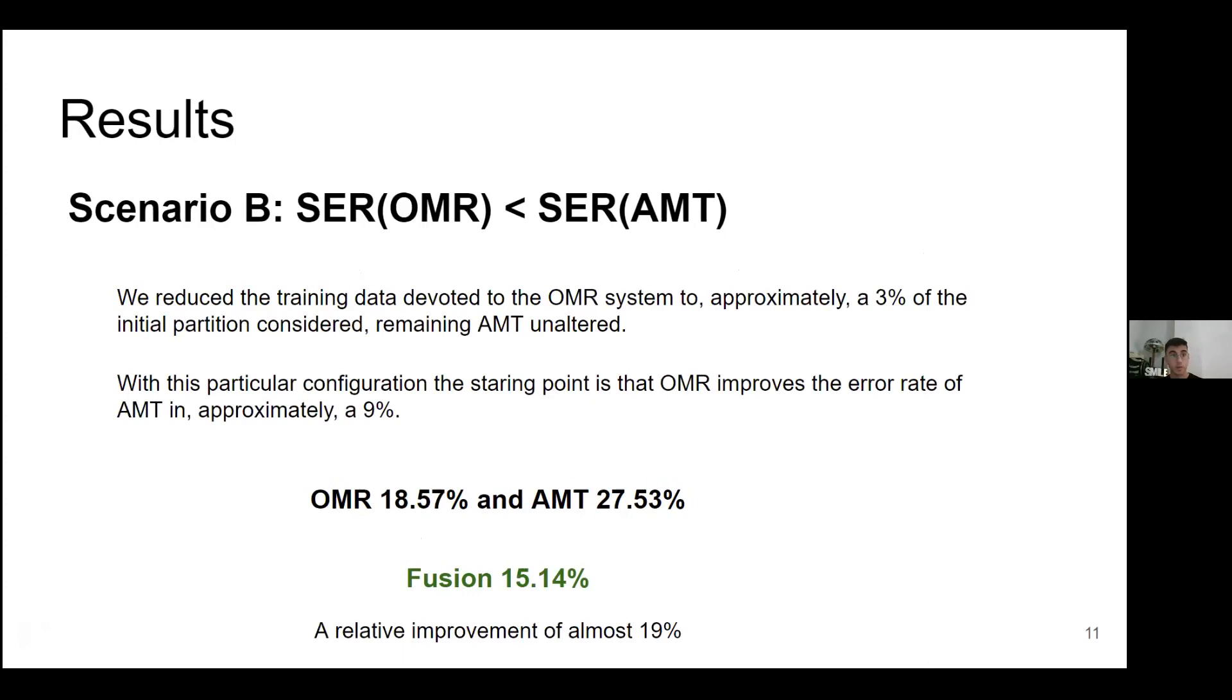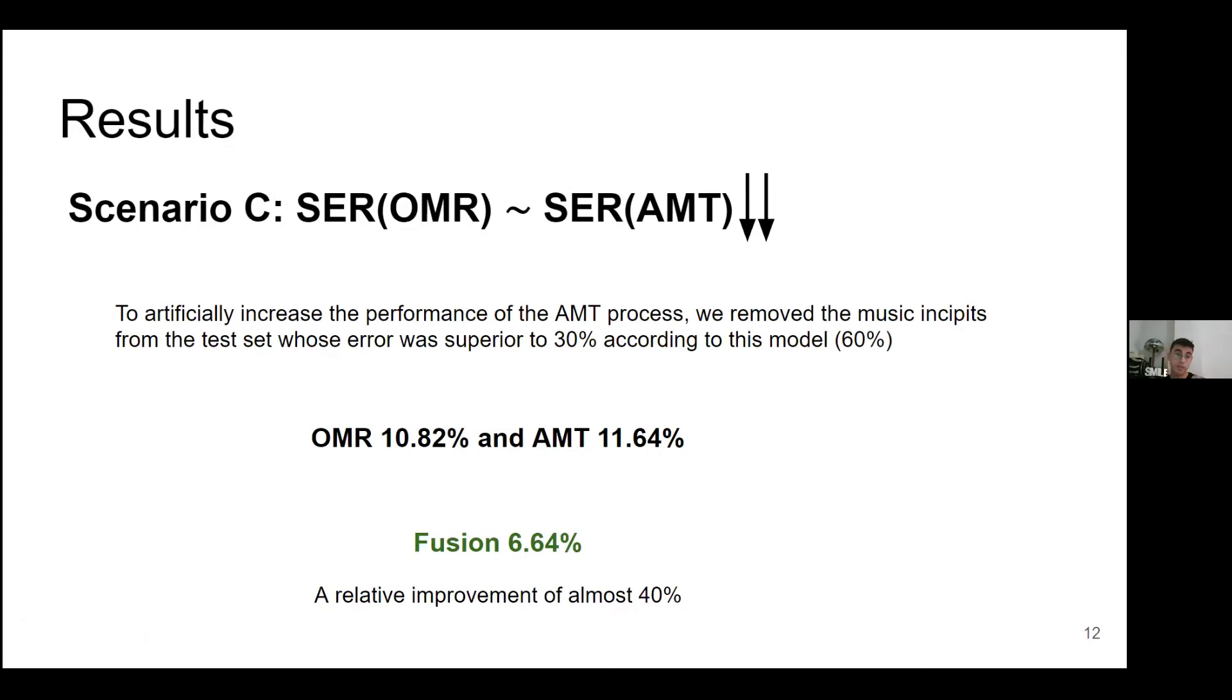Another one is scenario B, which is the case if one of them works better than the other. In this case, we have a relative improvement of almost 19%. And scenario C is the same case as scenario A, but in this case we have a small margin to improve. We get a relative improvement of almost 40%.